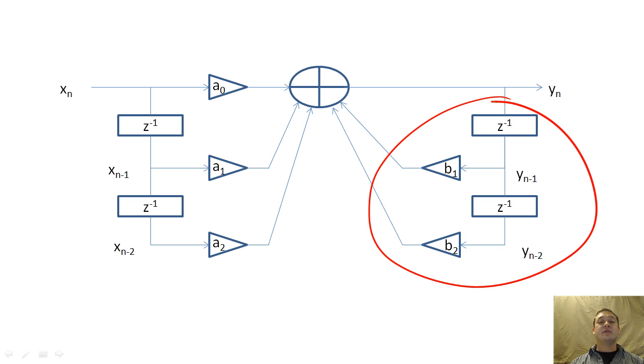IIR filters are powerful because they can more closely approximate a desired H sub D with a lower order filter than a comparable FIR filter.